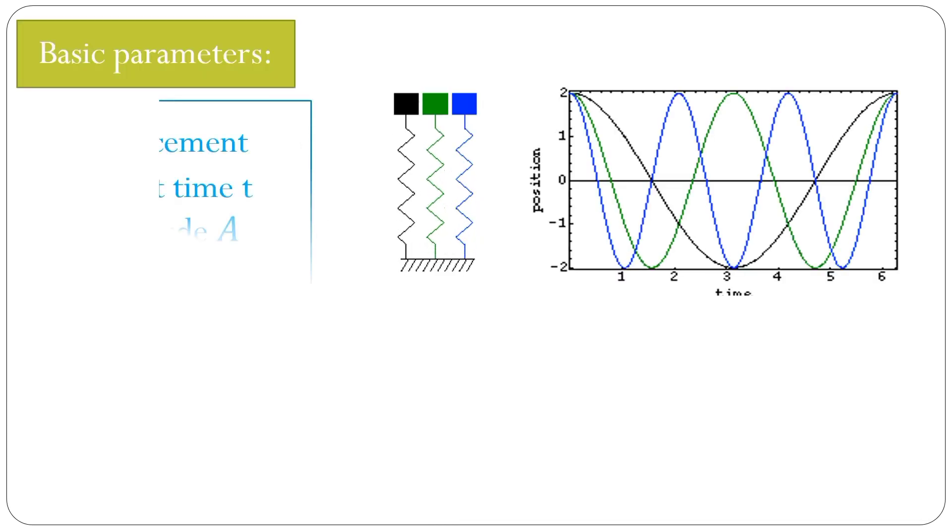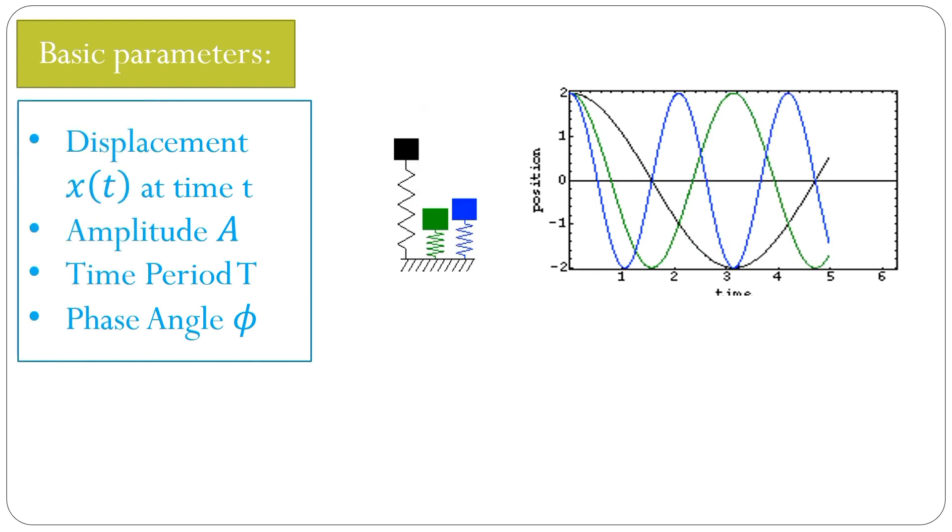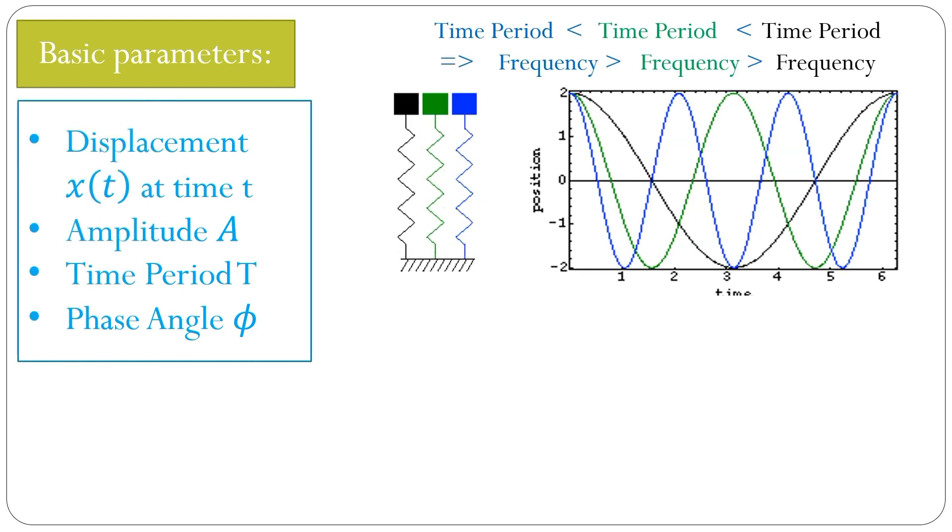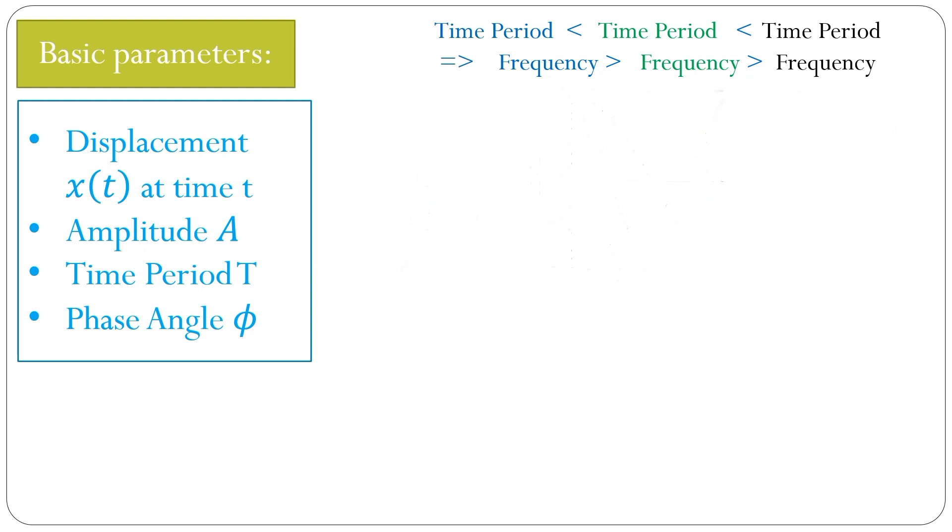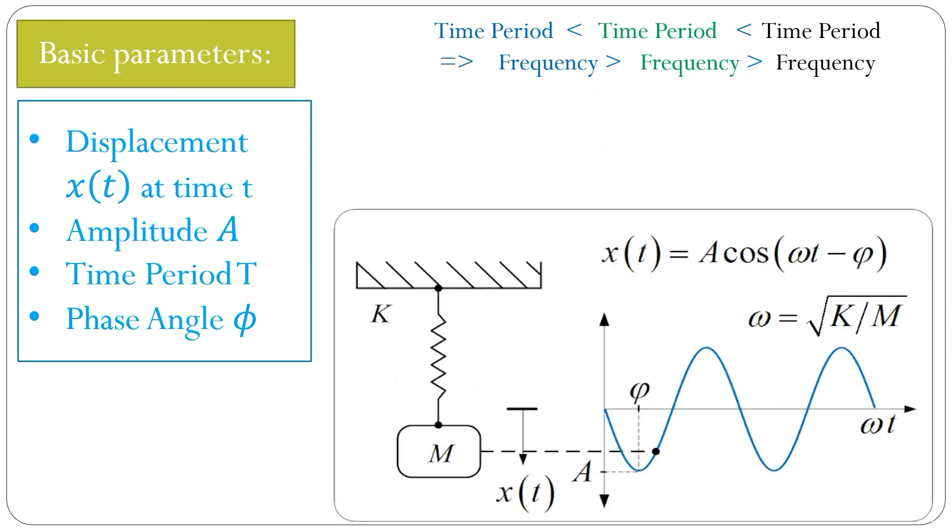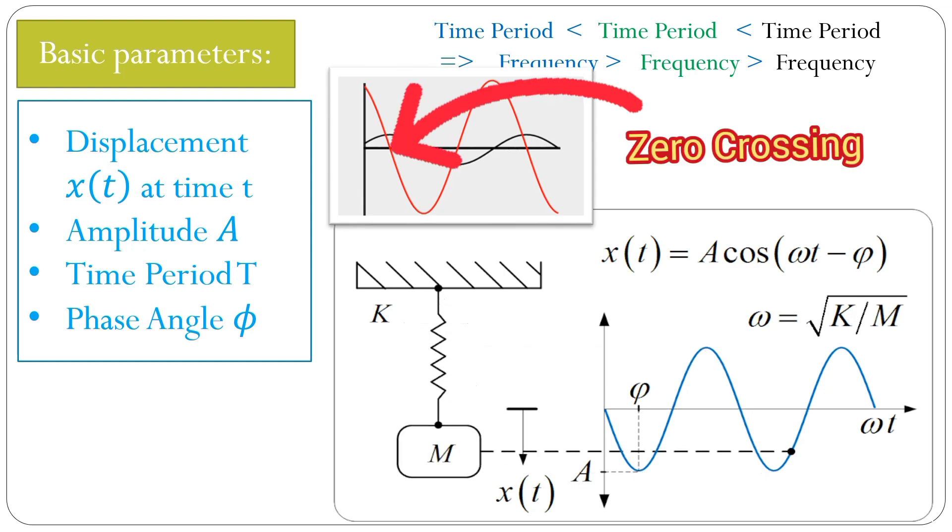Now the question is where do we find this amplitude in the diagram? This is not very difficult. In fact, we will see that the extremum that we can see here, this is exactly A. And of course, whenever we get an extremum we find A, even so to say in the other direction, this is also A.